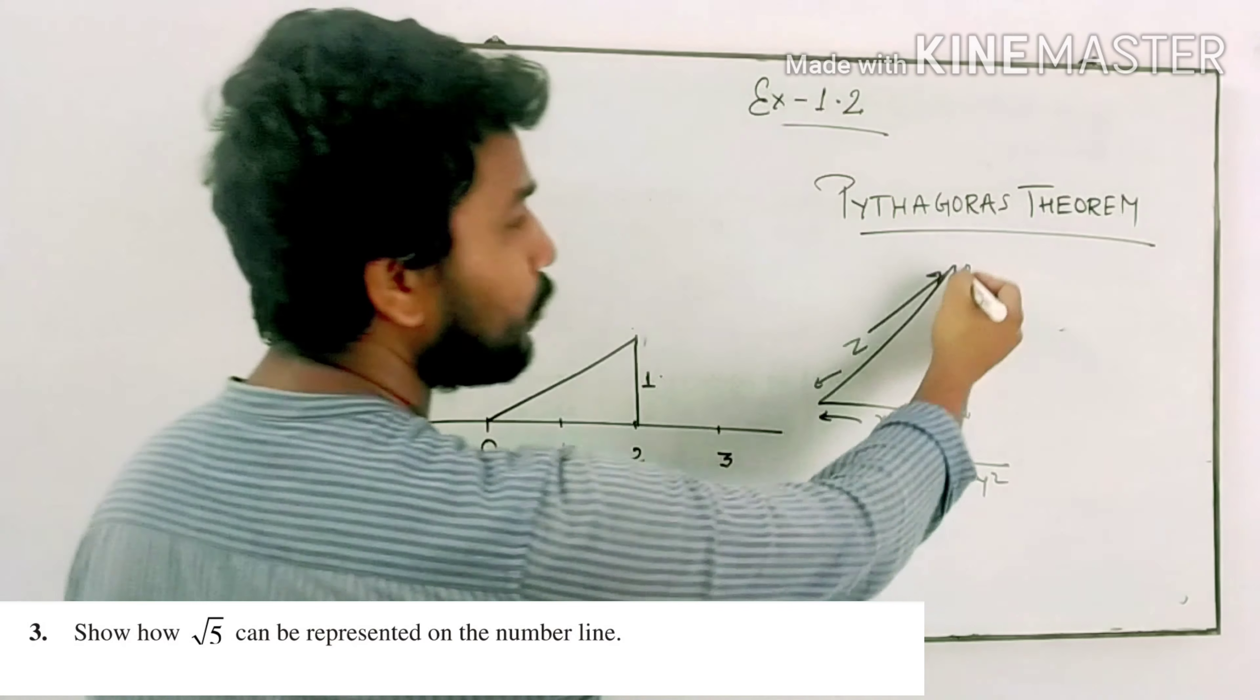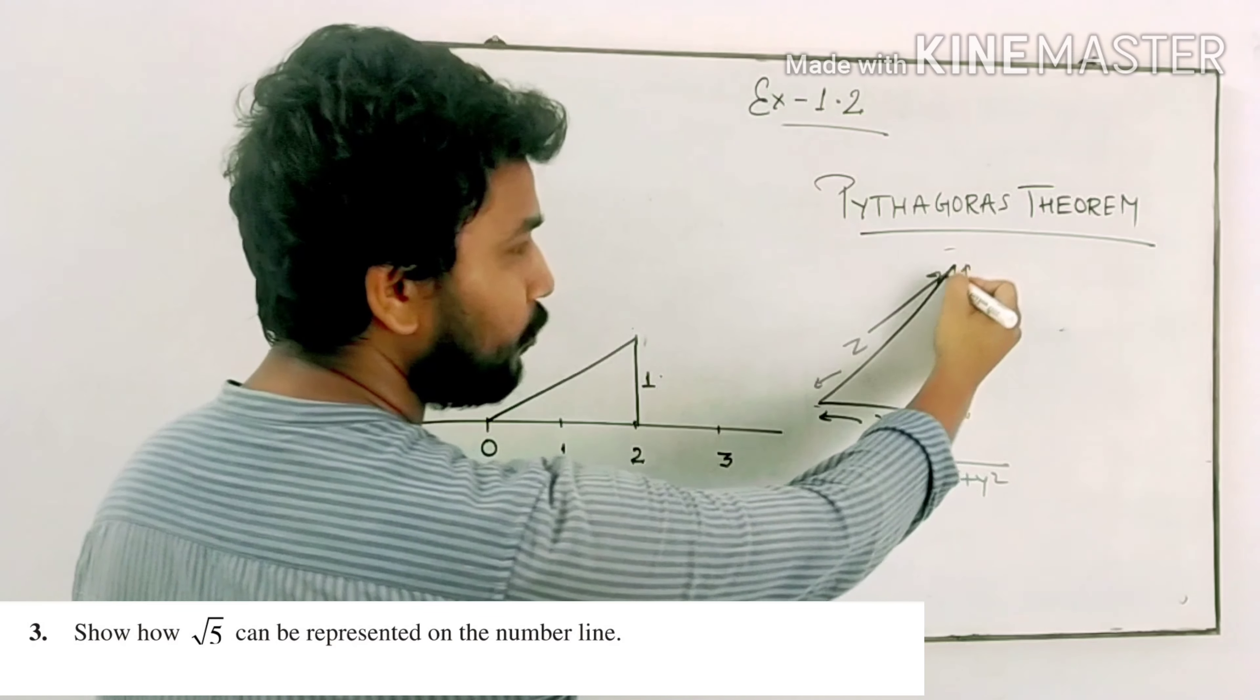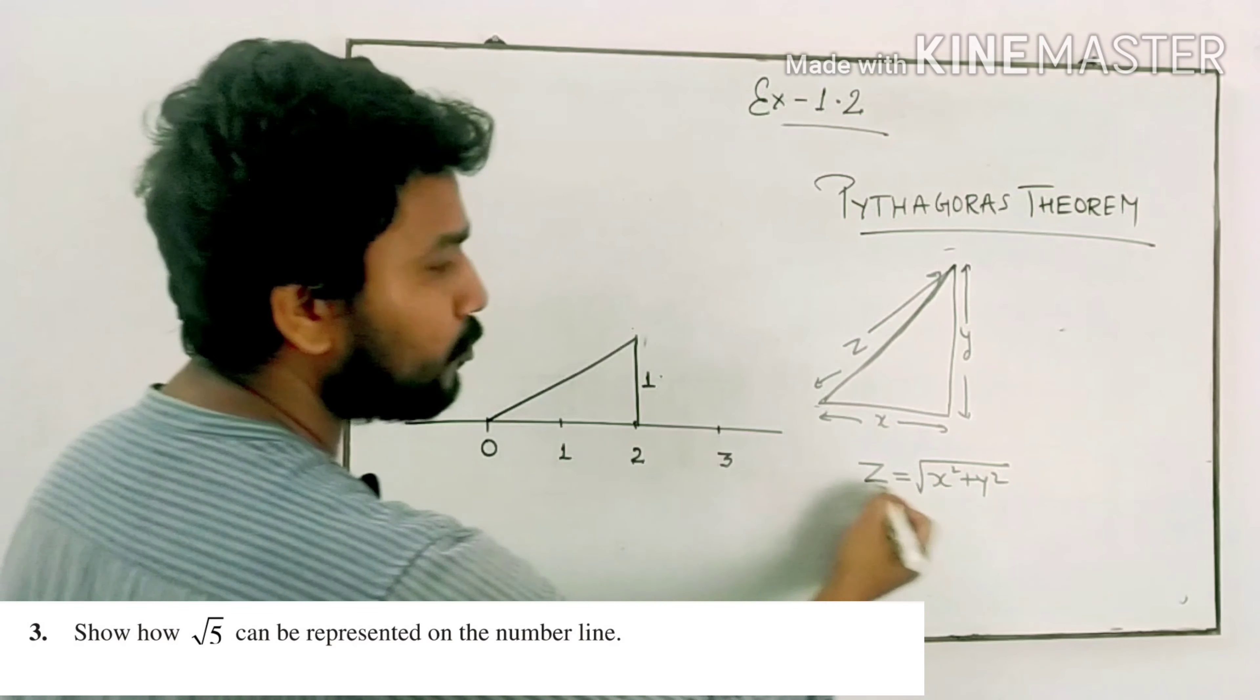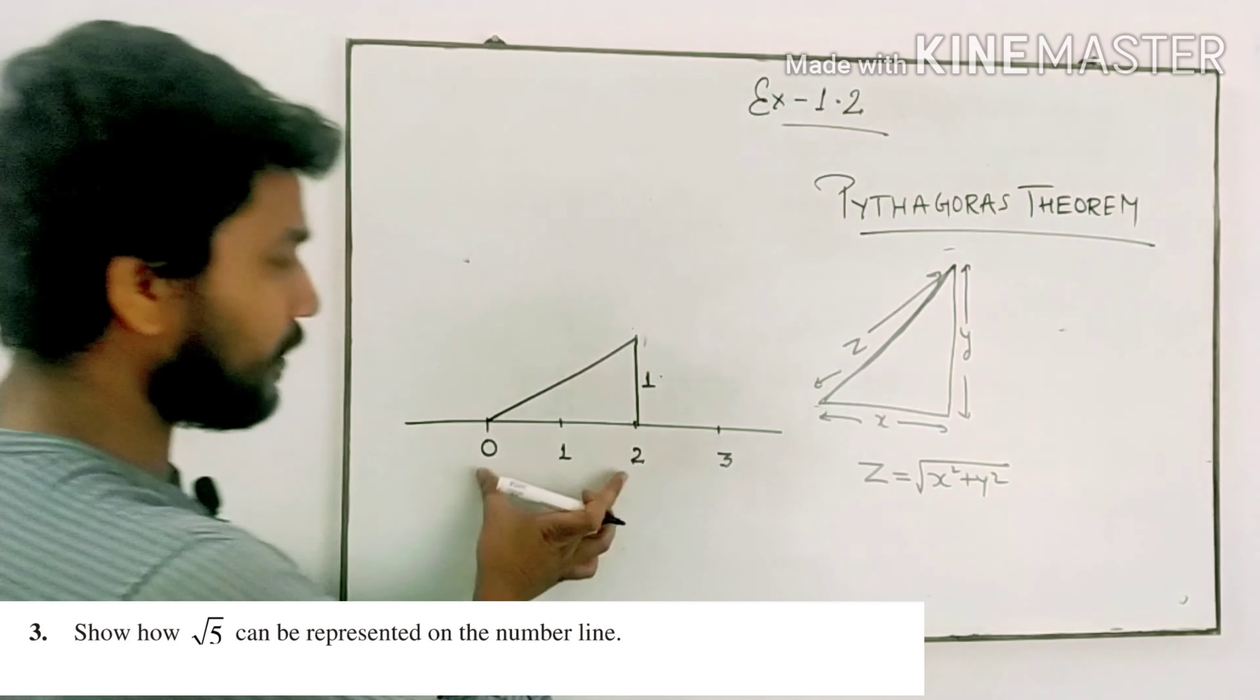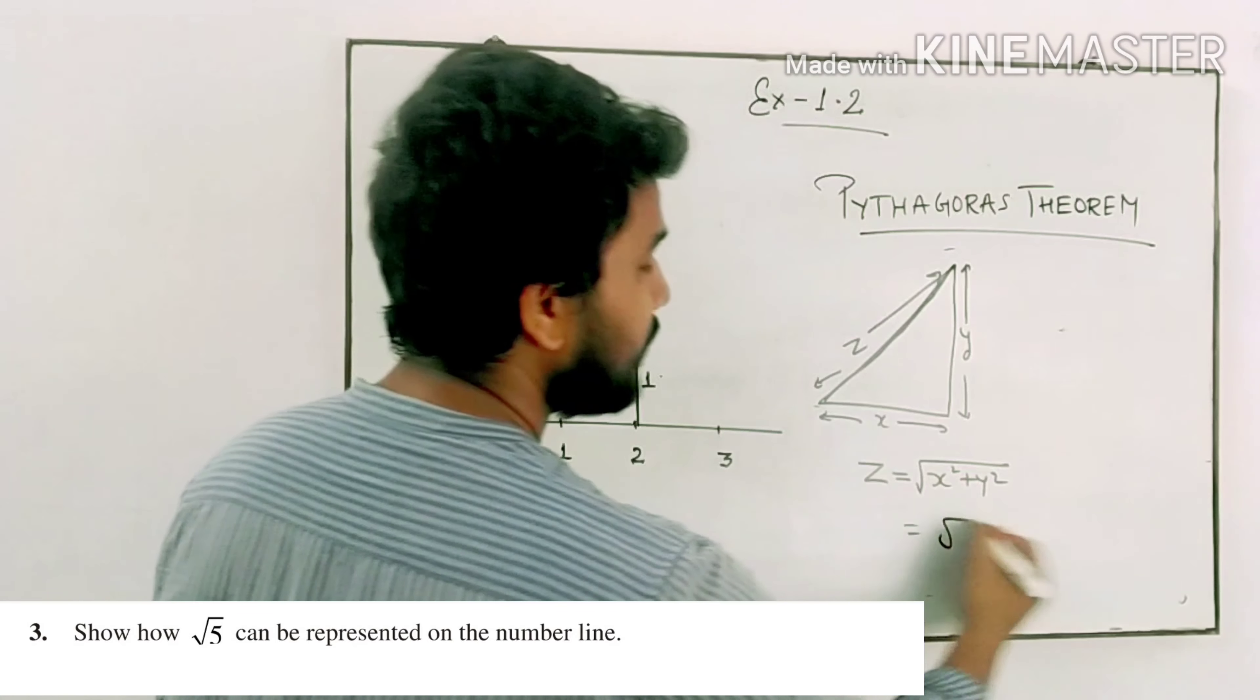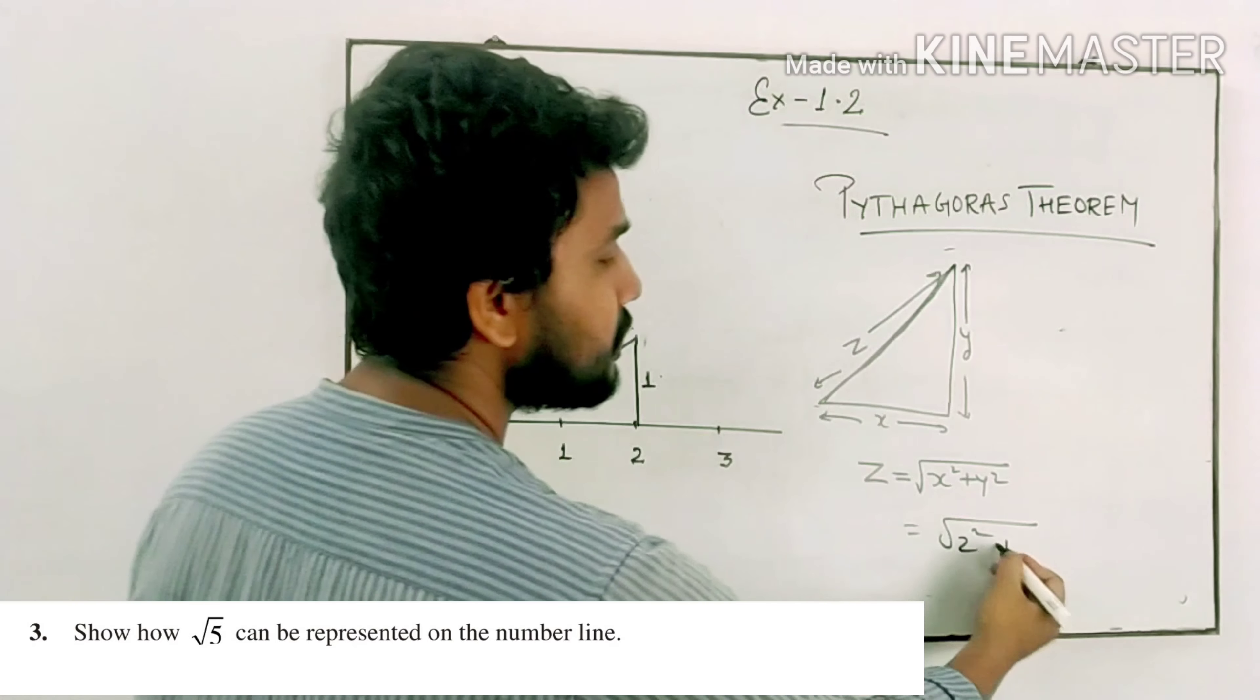In Pythagoras theorem, if we have a right angle triangle with base and height, the hypotenuse is under root of x square plus y square. So if this is 2 and this is 1, we get 2 square and 1 square.